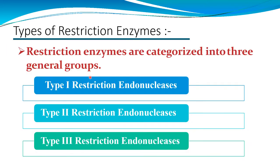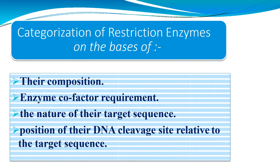Restriction enzymes are categorized into three groups: Type 1, Type 2, and Type 3 restriction endonucleases. The categorization is based on their composition, enzyme cofactor requirements, the nature of the target sequence, and the position of the DNA cleavage site relative to the target sequence.